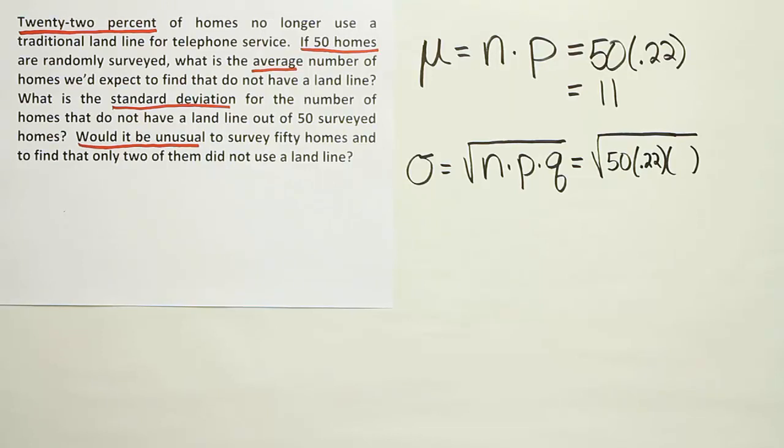Q is all the leftover probability. If there's a 22% chance that a particular home does not have a landline any longer, then what's the leftover amount? It'd be 78%. So 100% minus 22% gives you 78%. 78% of the homes do have an actual landline still in their house. These are the three numbers you need. You multiply them, take the square root, and that'll give you your answer.